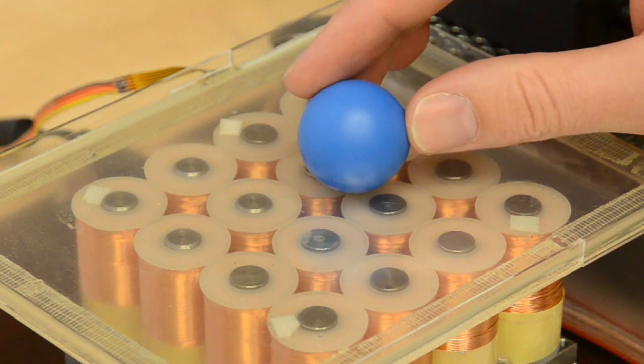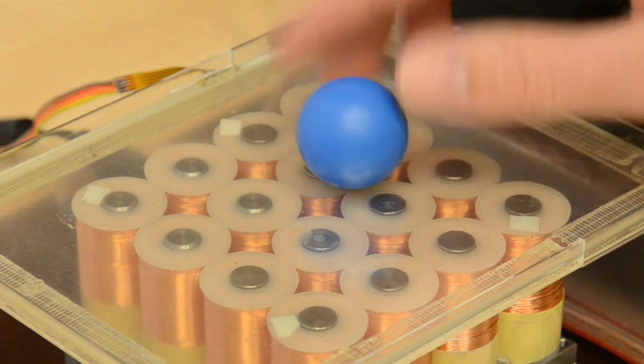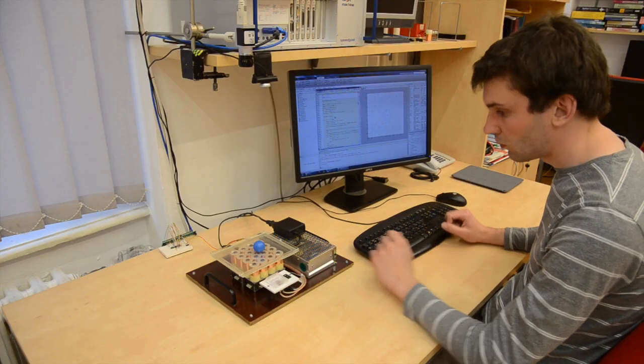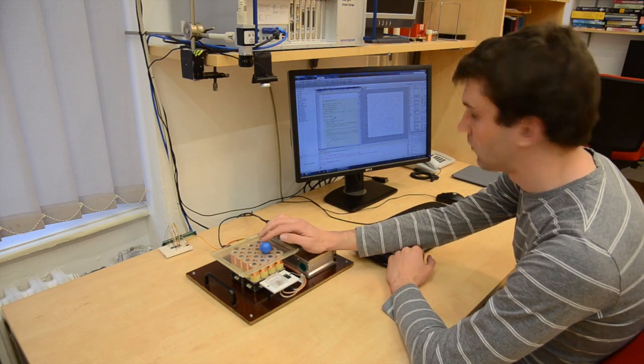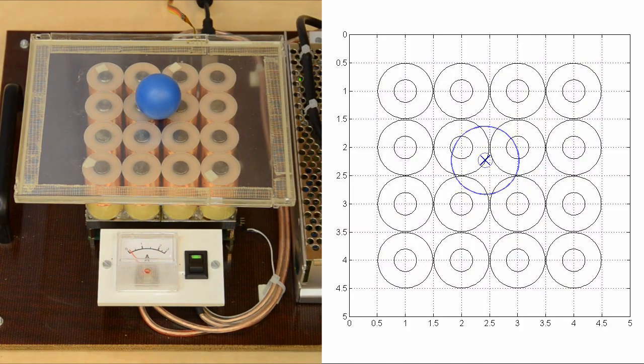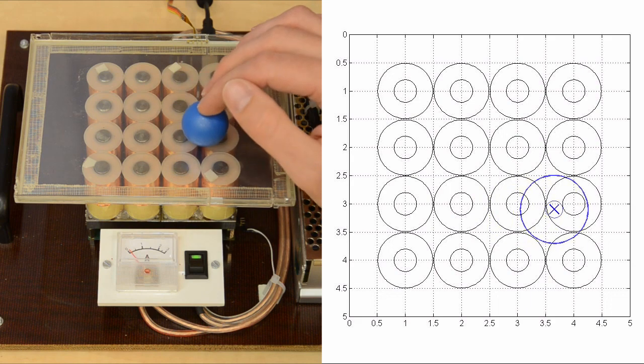If we want to control position in the whole plane, we need feedback control. So let's go for it. First, we need position measurement. This is done by resistive touch foil connected to data acquisition card.